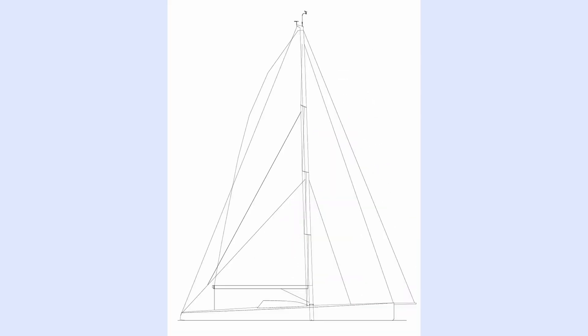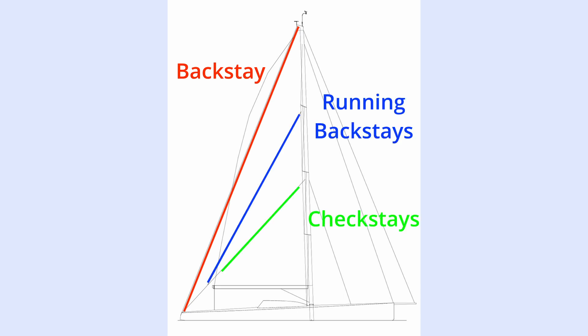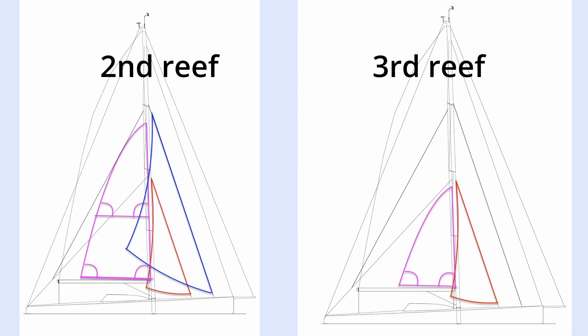In stronger winds, we have a fixed backstay along with running backstays and checkstays, with a system to adjust and disconnect the checkstays from the running backstays as needed. An important aspect of our sail plan is that the positions of the second and third reef in the mainsail are chosen with these stays in mind — the reef positions allow the mainsail to tack freely without needing to slacken the running backstays.